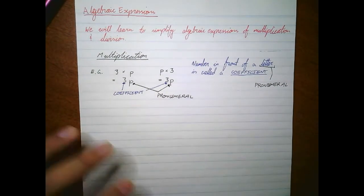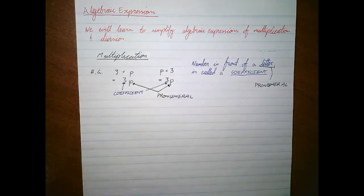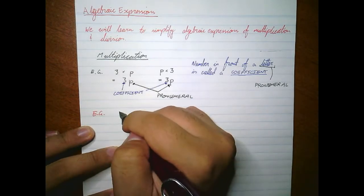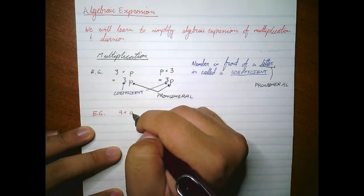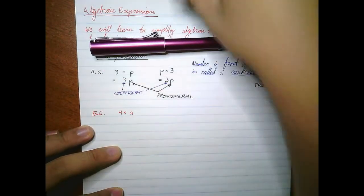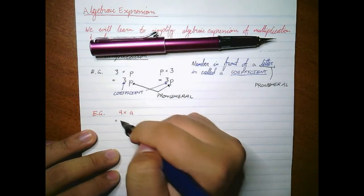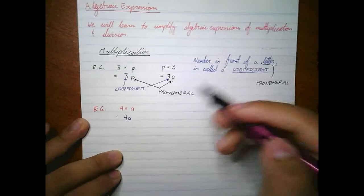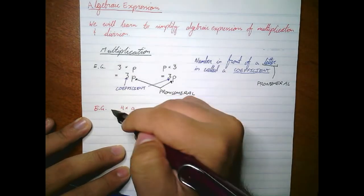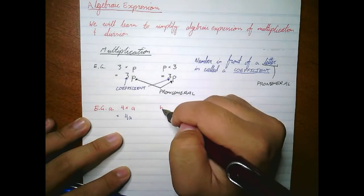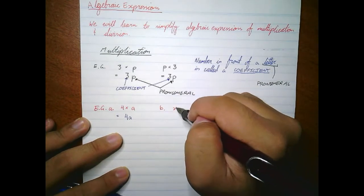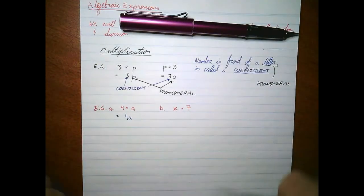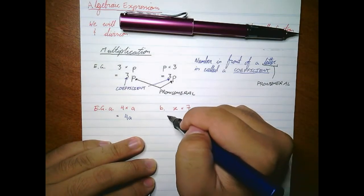Let's take a few more examples. If we had 4 times a, the solution is just 4a. For example b, if we had x times seven, we would just write this as 7x.